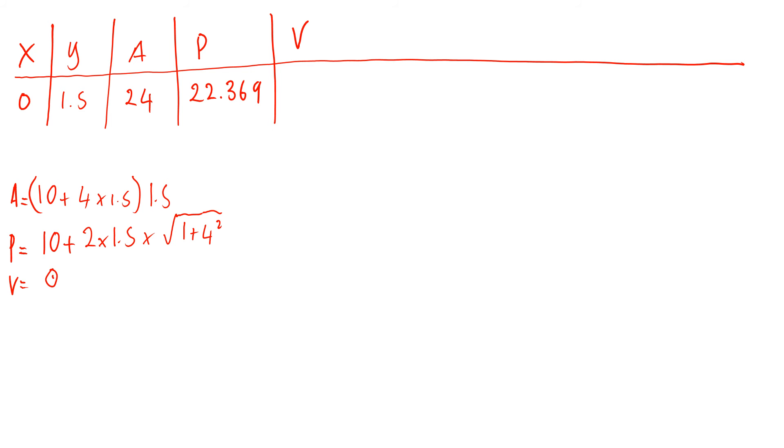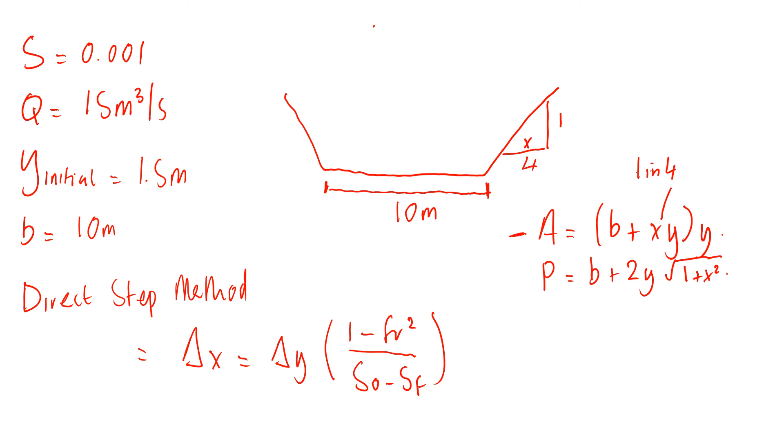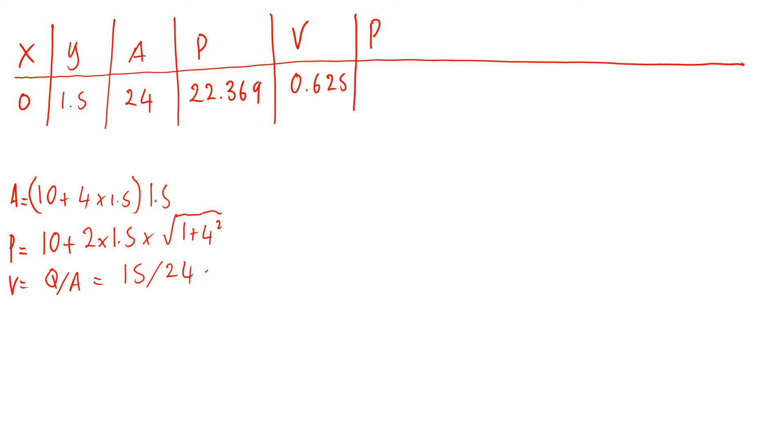Next term you need to calculate is v. V equals Q over A, which is 15 divided by 24, giving you 0.625. Next term is R, the hydraulic radius. R equals A over P, so 24 divided by 22.369, and you get 1.0728.